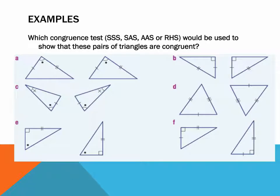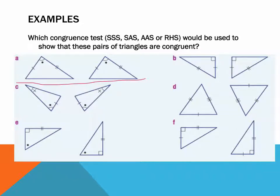What you need to demonstrate is what kind of test you would use — triple S, SAS, AAS, or RHS — based on the information provided. In example A, I've been given two sides that are respectively equal and an angle. Two sides and an angle — that would be SAS, side-angle-side.